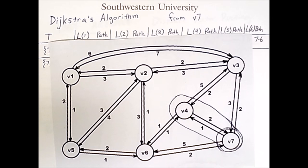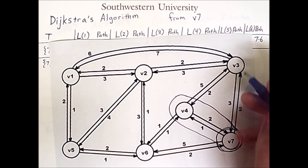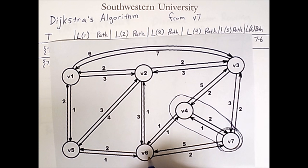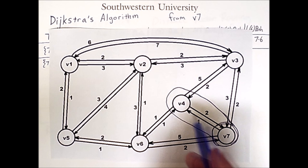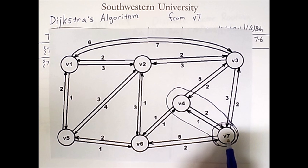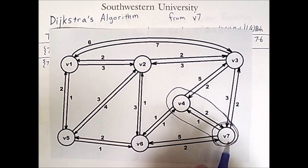So adding vertex 4 does not allow us to reach any vertices that we couldn't reach before, but we can reach vertex 6 for a lower cost. The cost from 4 to 6 is 1. Therefore, the overall cost of this path is less than the original path we had directly from 7 to 6. So we will update that cost. Going to 6, a cost of 2, path 7, 4, 6.